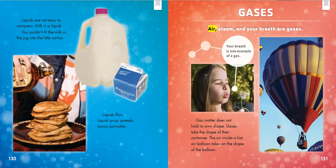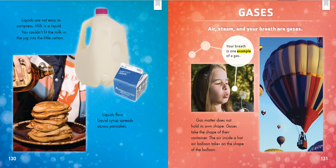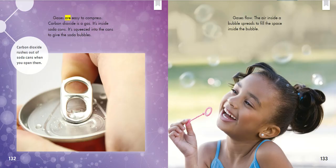Gases. Air, steam, and your breath are gases. Gas matter does not hold its own shape. Gases take the shape of their container — the air inside a hot air balloon takes on the shape of the balloon. Your breath is one example of a gas. Gases are easy to compress. Carbon dioxide is a gas; it's inside soda cans, squeezed in to give the soda bubbles. Carbon dioxide rushes out of soda cans when you open them. Gases flow — the air inside a bubble spreads to fill the space inside the bubble.